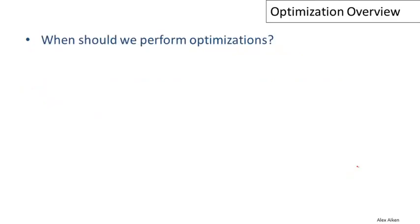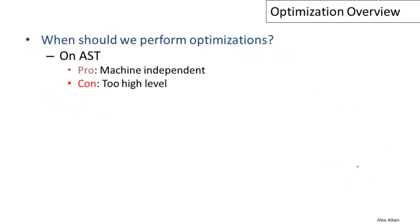A very basic question is when we should perform optimizations, and we actually have some choices. We could perform them on the abstract syntax tree, and a big advantage of that is that it's machine independent. But for many optimizations we want to do, the abstract syntax tree will be too high level — we can't actually even express the optimizations we want to perform, because those optimizations depend on lower-level details of the machine that aren't present in the abstract syntax tree.